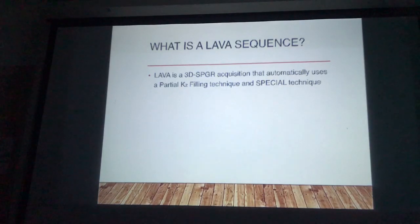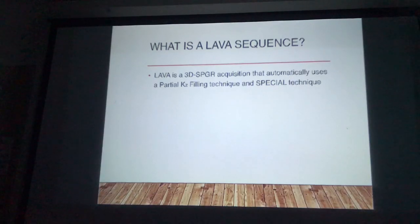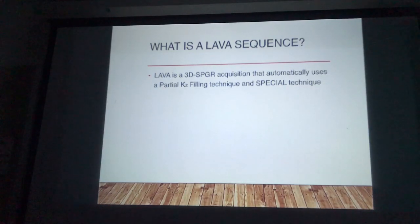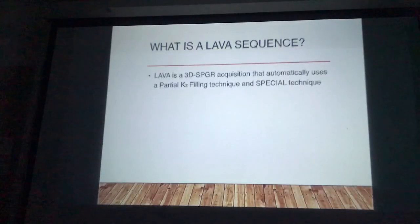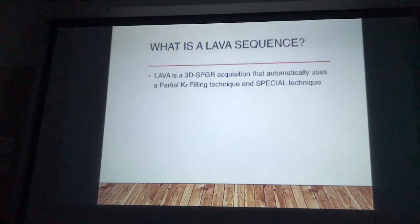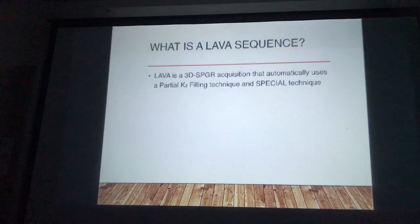Starting with just a Lava sequence in general — Lava is a 3D SPGR sequence. It will automatically use a partial filling technique and spectral technique. Essentially what this is doing is giving us a relatively quick fat sat sequence. That acceleration comes from the filling technique, and the spectral technique gives us our fat saturation. That's the overall broad application of Lava, and LavaXV and LavaFlex are each an offset derivative of that.